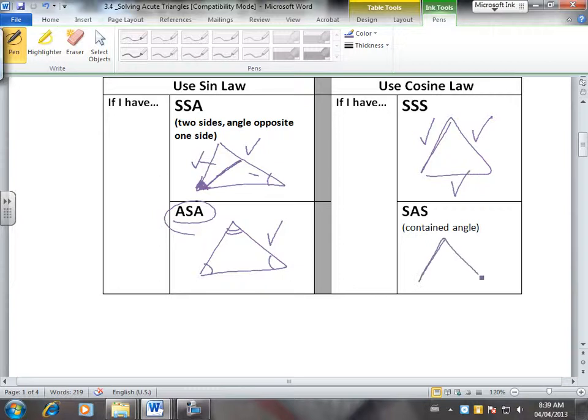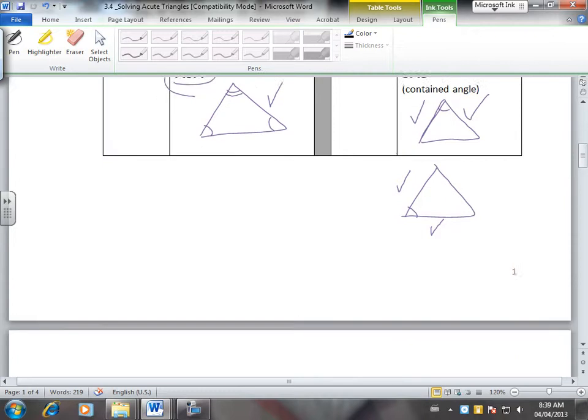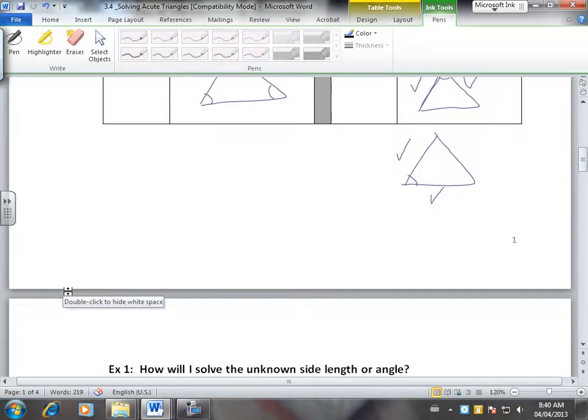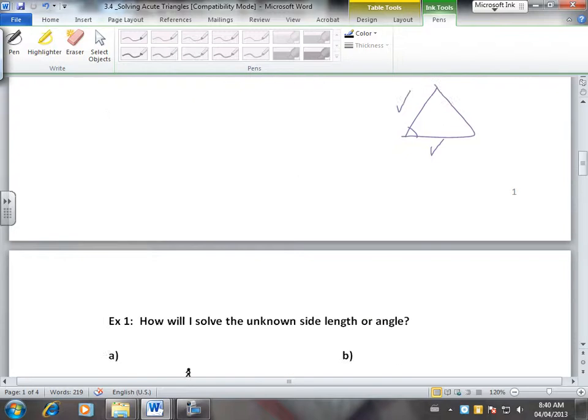And then if you have side, angle, side, and this one is not flexible, you need a contained angle. So you need the angle between two sides. So if you redraw this, if you had this angle, you need this side and this side. So you look at your triangle, you look at the information you have, you decide which law to use.